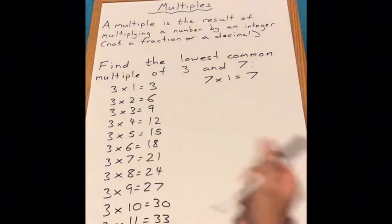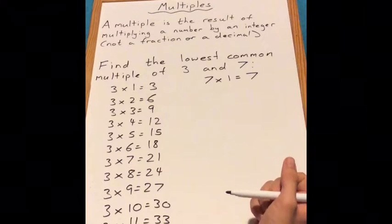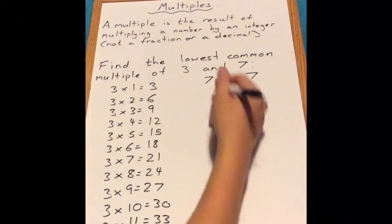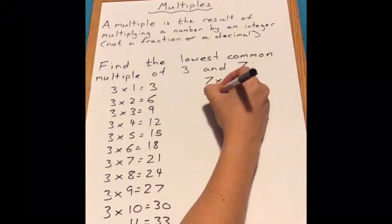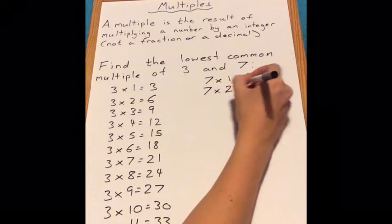We've gone all the way to 3 times 12 equals 36. What we would then do is write out the 7 times tables as well. So we do 7 multiplied by an integer to give us the multiples.